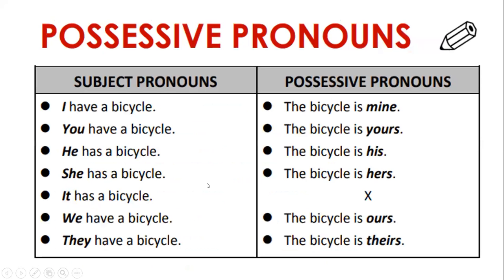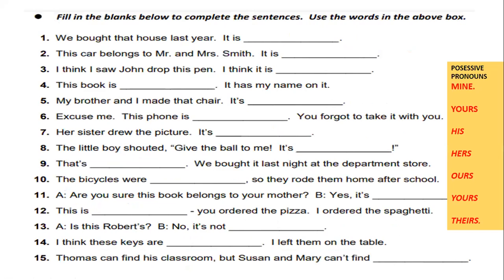So now, just to remind you — subject pronouns: I, you, he, she, it, we, and they. Possessive pronouns: mine, yours, his, hers, ours, and theirs. Now let's do this — the possessive pronouns, not adjectives. They go normally at the end because they don't modify any noun.